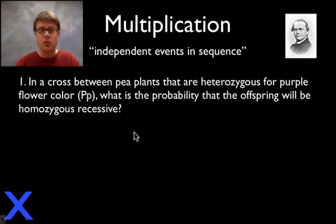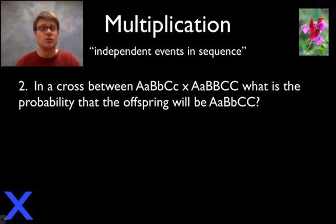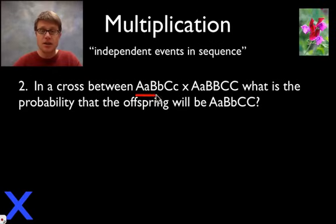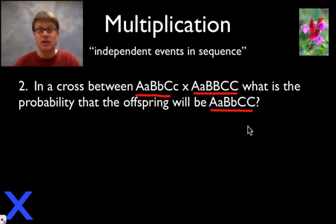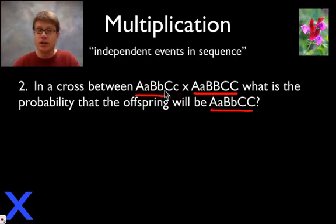The next problem is going to show you how important it is to learn to do multiplication. In a tri-hybrid cross between these two parents, what is the probability that the offspring will have a specific genotype? This is a question that I love to ask on my test and AP Biology folks love to ask as well. When some people see a tri-hybrid cross they imagine an 8 by 8 Punnett square — impossible to solve. But if you use the rule of multiplication, it's actually really simple.